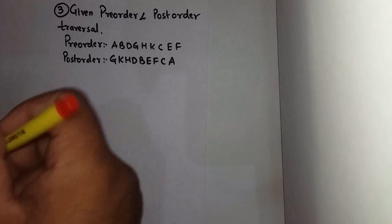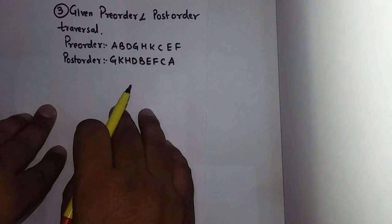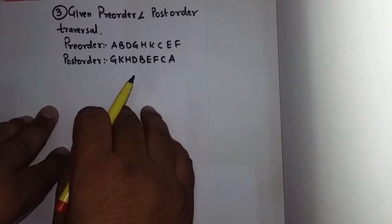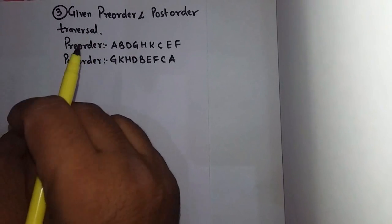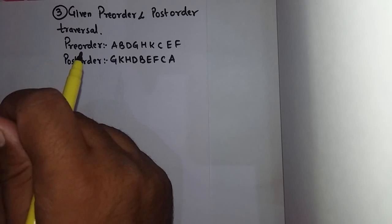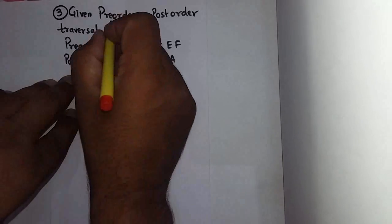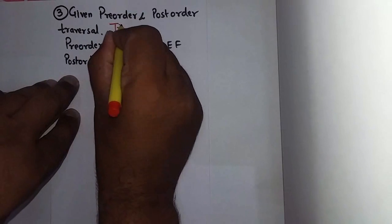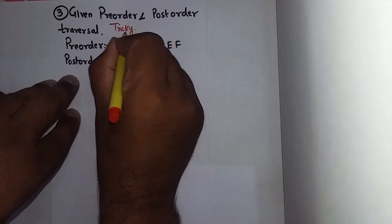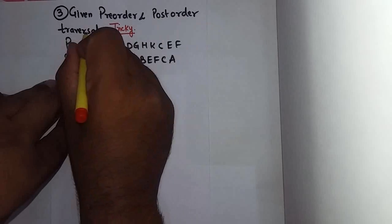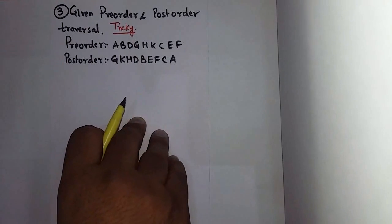Hello students. In the previous two classes we have seen how to create binary tree when pre-order and in-order traversal are given, and post-order and in-order traversal. Now this is a bit tricky case. In this case we are given with pre-order and post-order traversal.